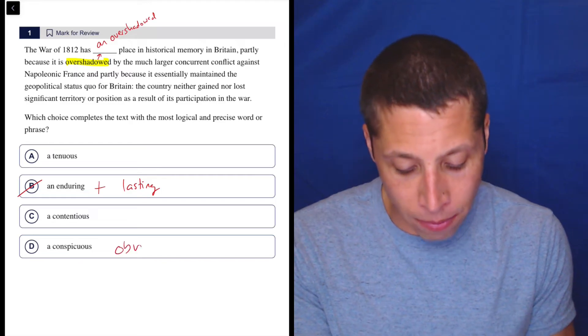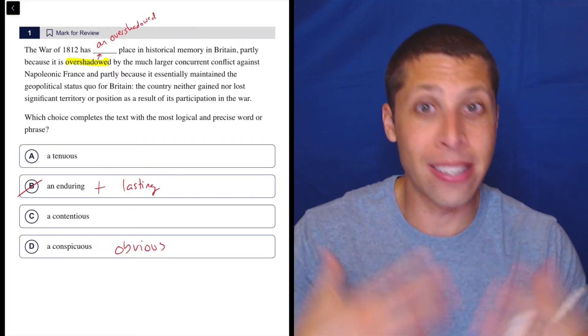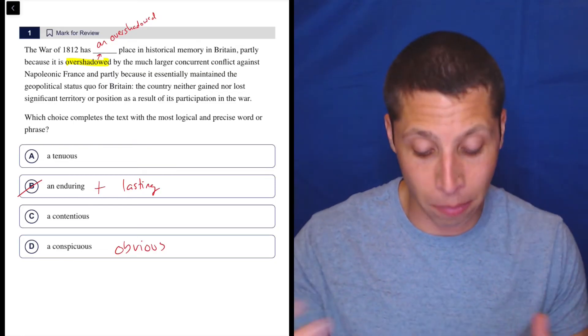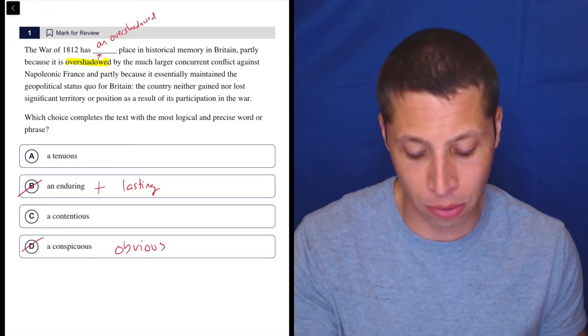Conspicuous means something is obvious. Again, if it's overshadowed, it kind of means the opposite, that it's not obvious. Something else is obvious. The Napoleonic wars, those are more important. So again, this is the opposite word there.